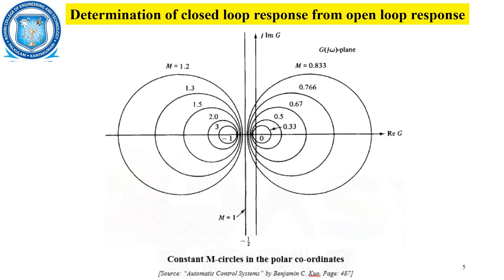Similarly, on the left hand side of M = 1, we have increasing M values: 3, 2, 1.5, 1.3, 1.2. Automatically, for various M values greater than 1, we have circles. This is how the closed loop response can be obtained from the open loop response.